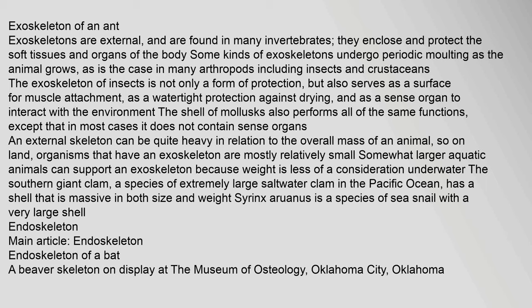Exoskeletons are external and are found in many invertebrates; they enclose and protect the soft tissues and organs of the body. Some kinds of exoskeletons undergo periodic molting as the animal grows, as is the case in many arthropods including insects and crustaceans. The exoskeleton of insects is not only a form of protection, but also serves as a surface for muscle attachment, as water-type protection against drying, and as a sense organ to interact with the environment. The shell of molluscs performs all the same functions, except that in most cases it does not contain sense organs.